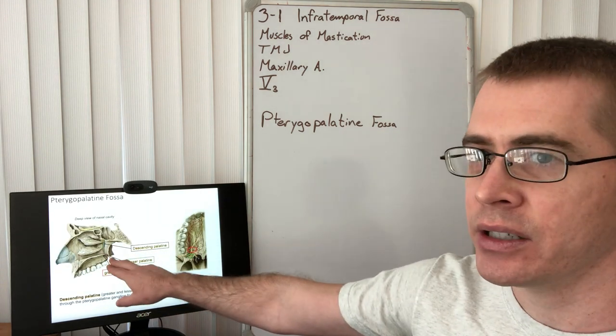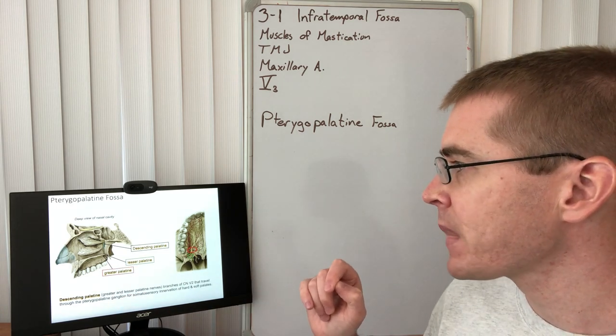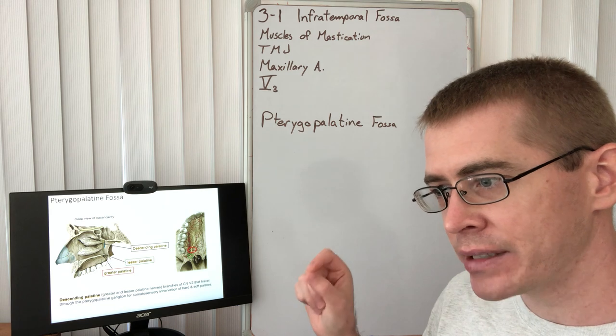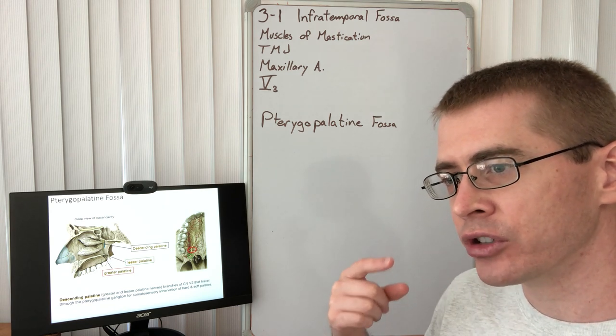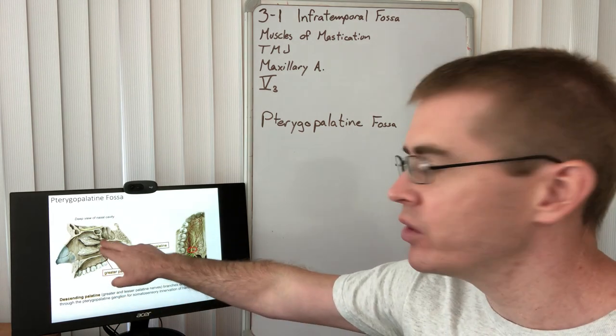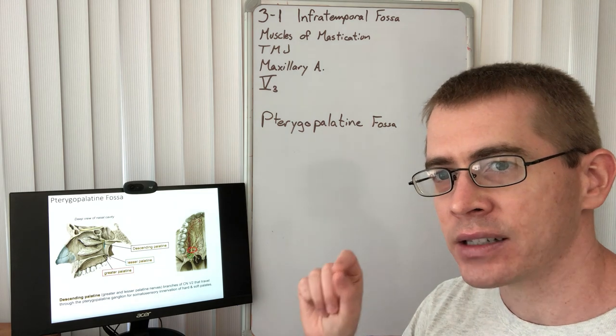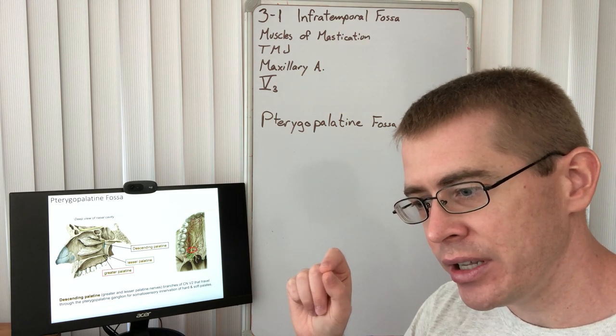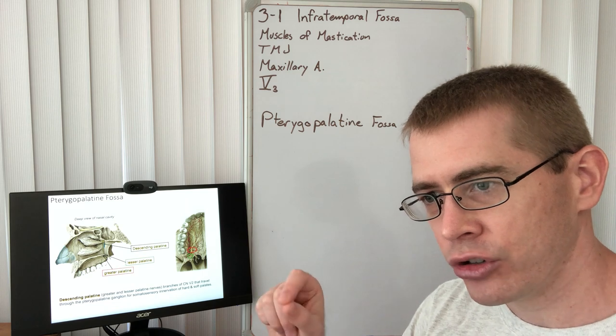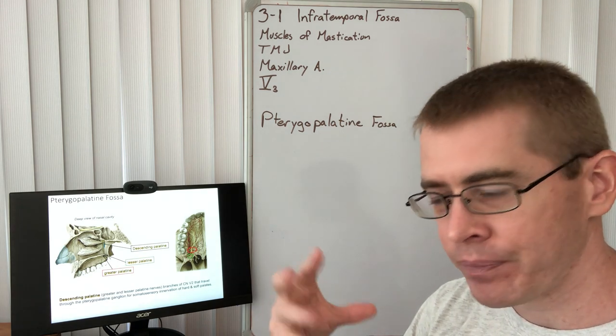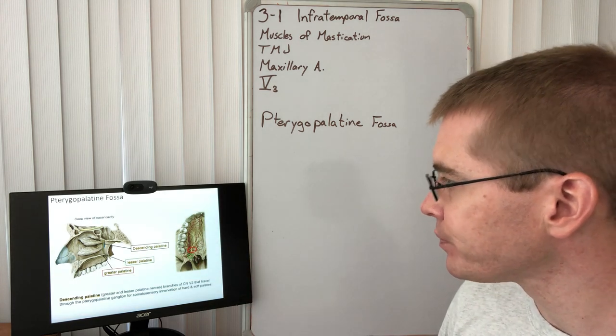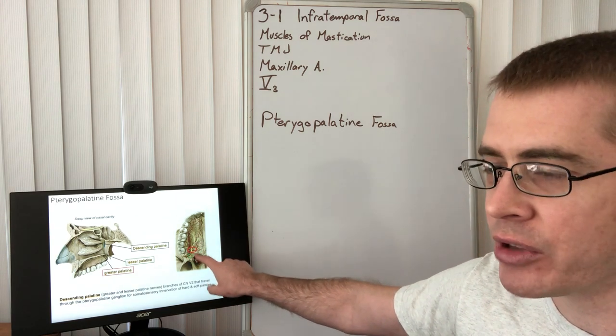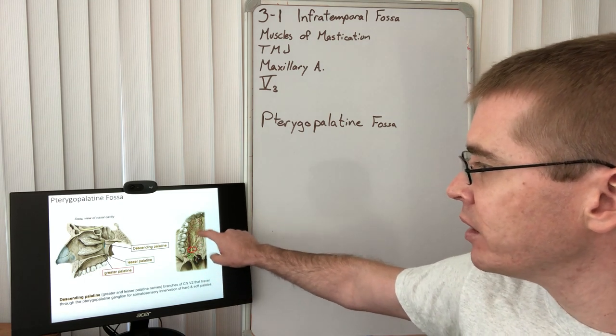So here are those greater and lesser palatine nerves descending from the pterygopalatine ganglion. These are the GSA components providing general somatic afferent components to the palate. These are traveling through the pterygopalatine ganglion, they are not synapsing there. We can see where the greater and the lesser palatine nerves, lesser is going to supply a lot of the soft palate, and the greater is going to supply the hard palate.